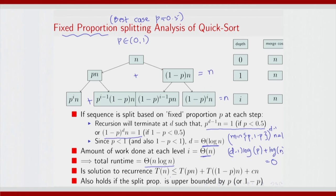Alternatively, one could also solve the recurrence equation. The time required at n is basically upper bounded by the time required for the two partitions T(pn) and T((1-p)n), plus a constant merge time cn. By the master theorem you could show that this would mean O(n log n).